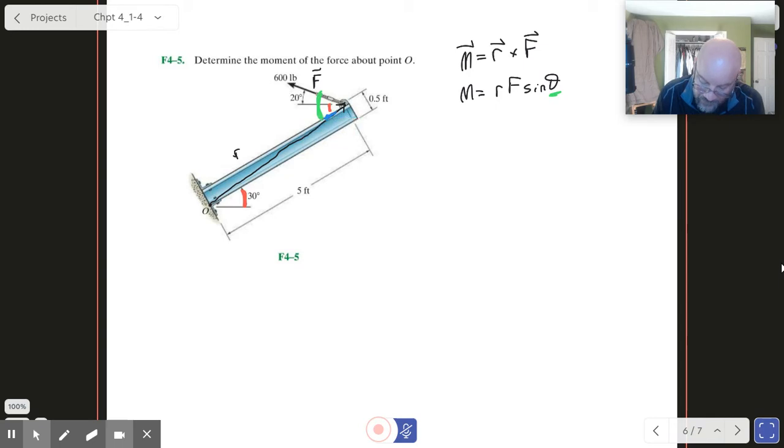So if we can figure that out, then we're in business. R is super easy to get at—r is just going to be square root of 5 squared plus 0.5 squared, and that turns out to be 5.025.